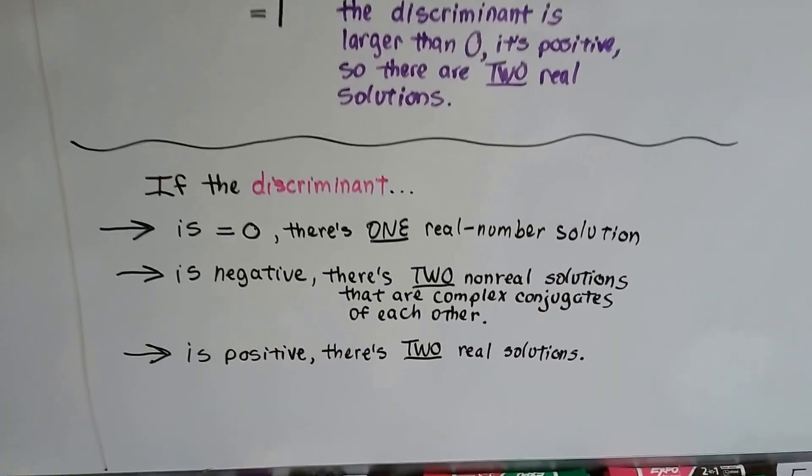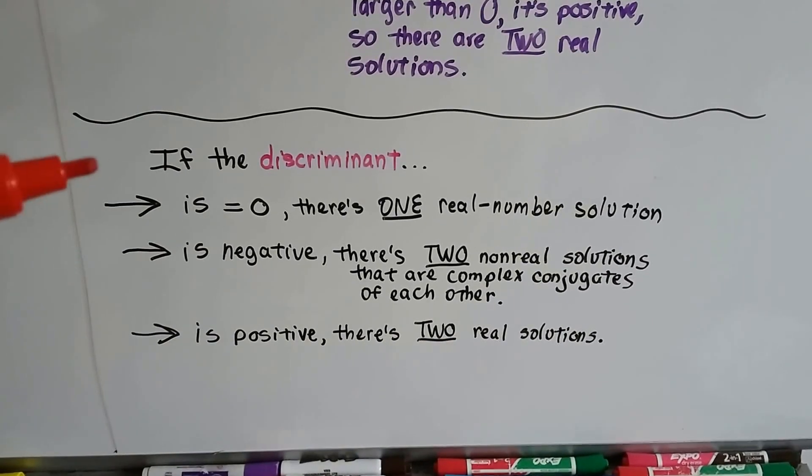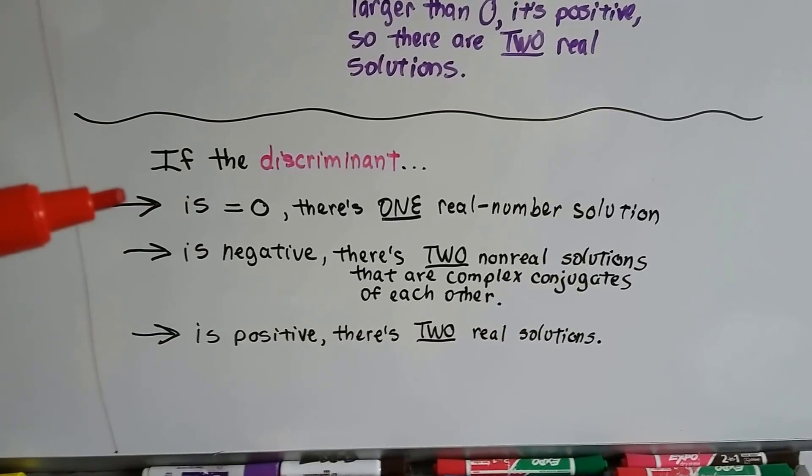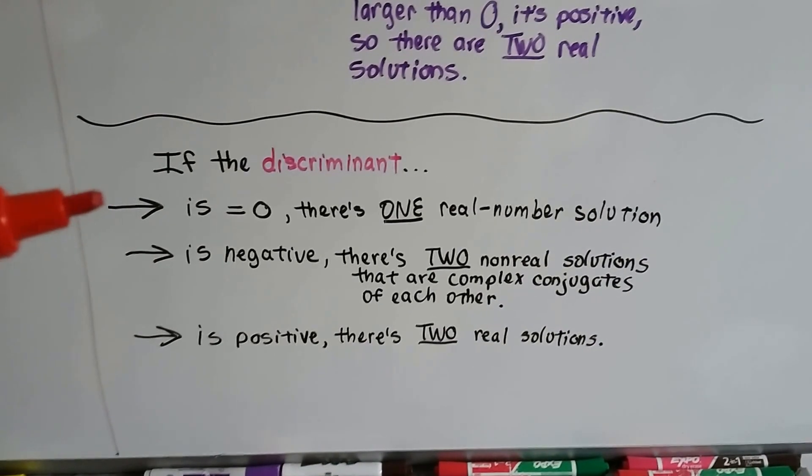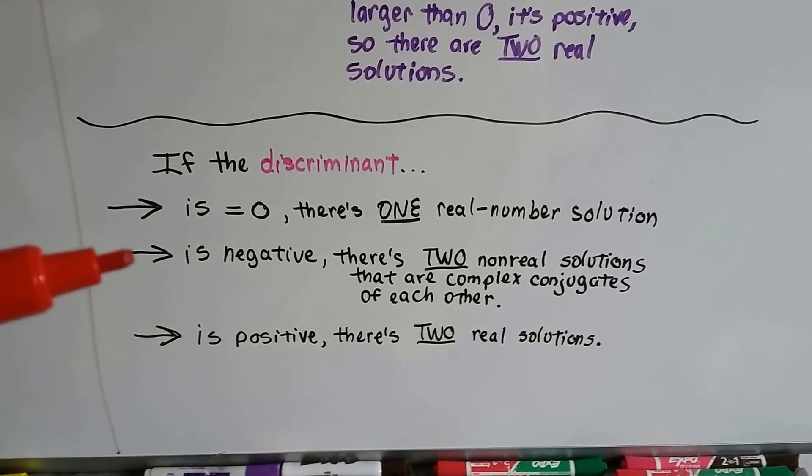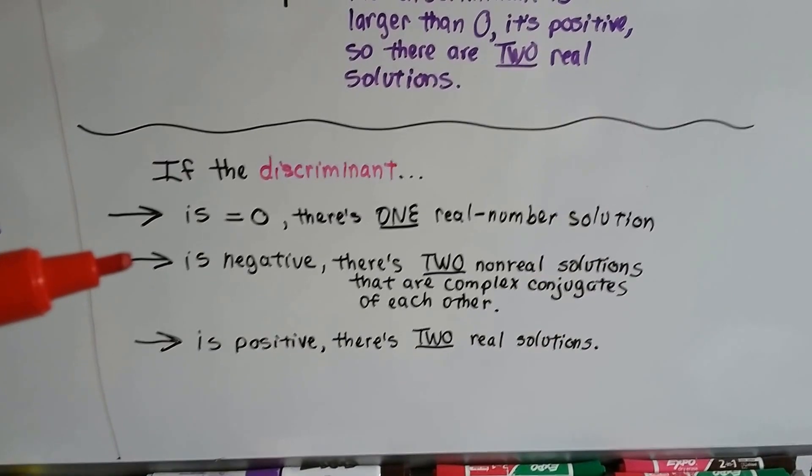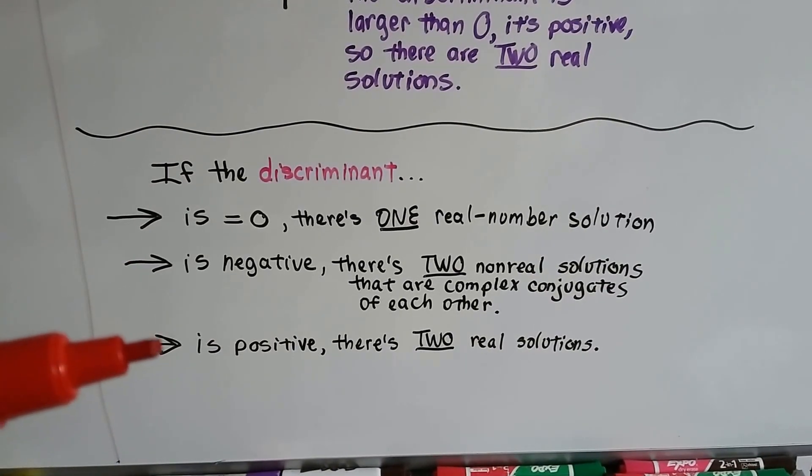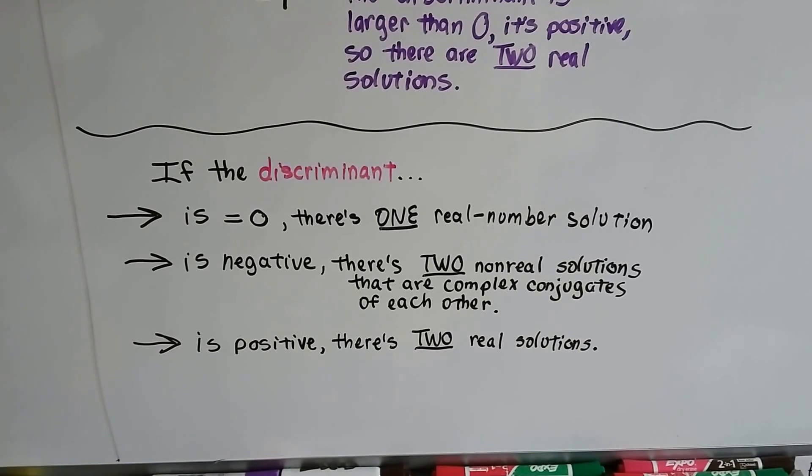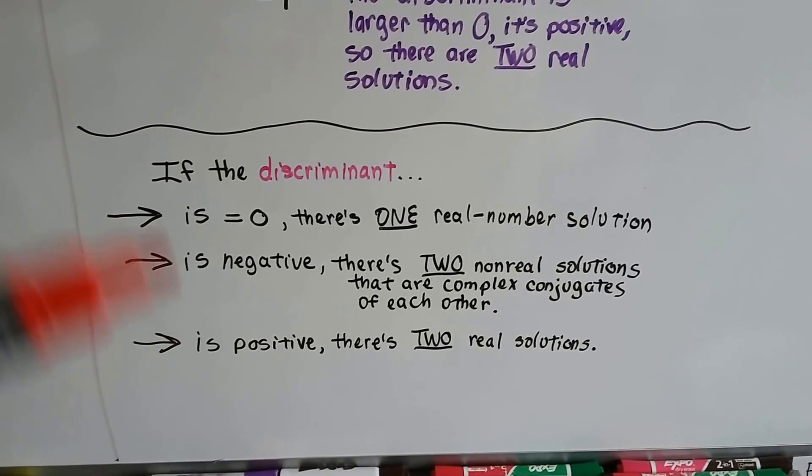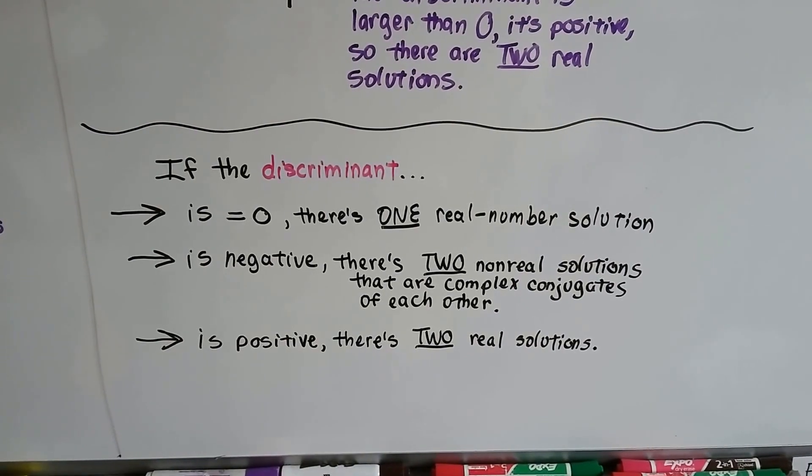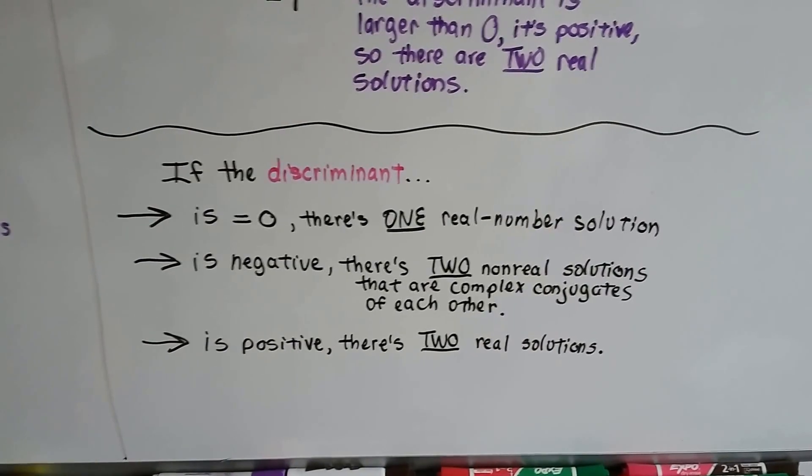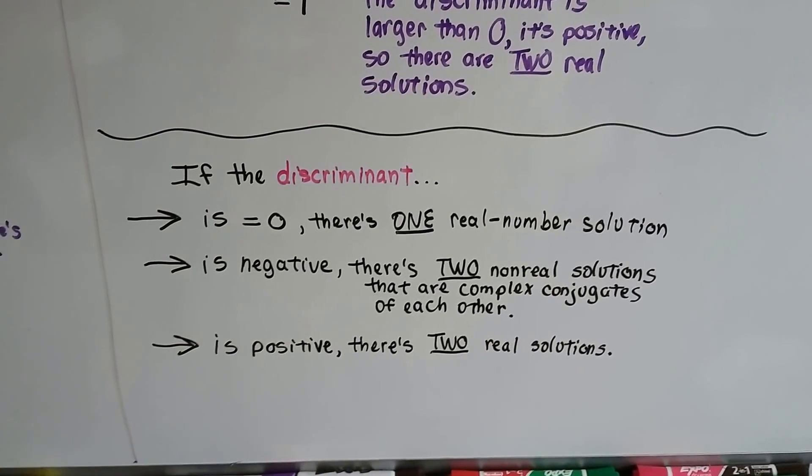So, this is it in a nutshell. If the discriminant is equal to zero, there's one real number solution. You ought to write this in your notes. If it's negative, there's two non-real solutions that are complex conjugates of each other. And if it's positive, there's two real solutions. This is going to be very helpful for you to write down in your notes somewhere, in the section for quadratic equations and the quadratic formula.